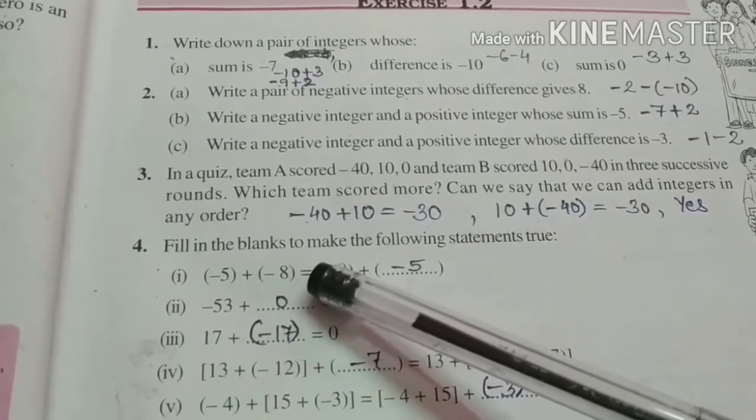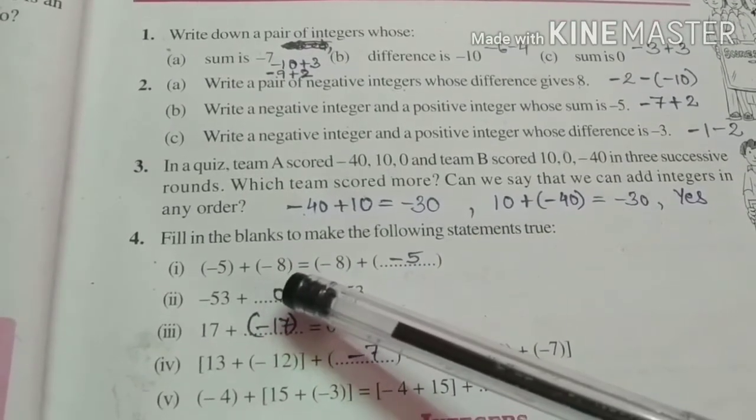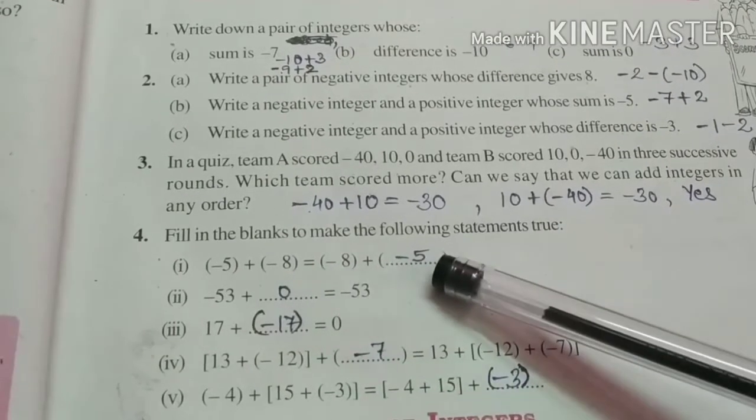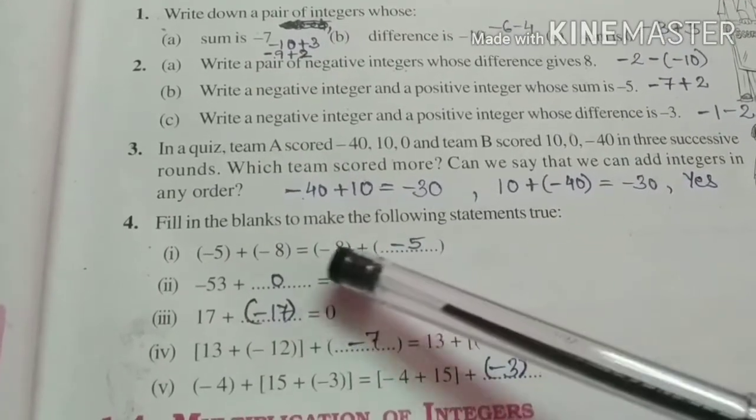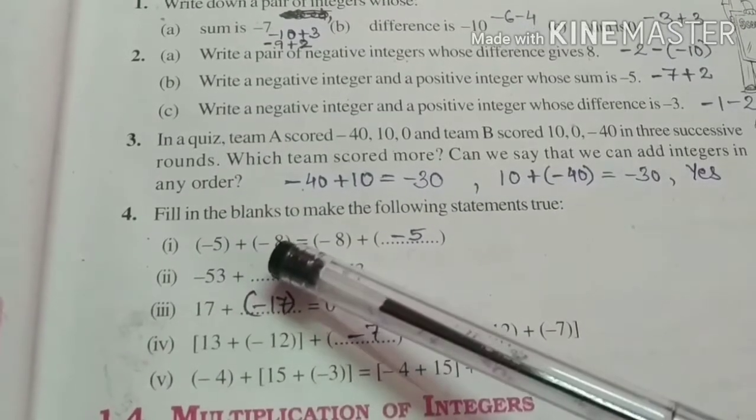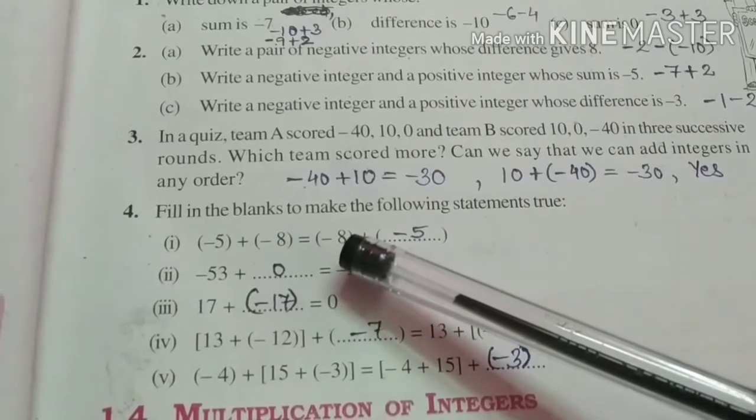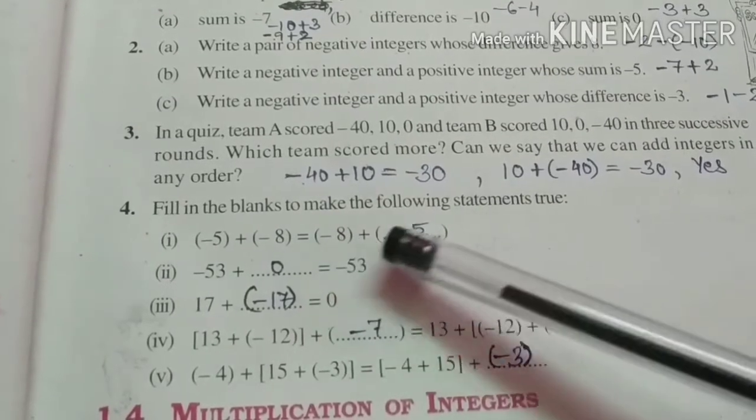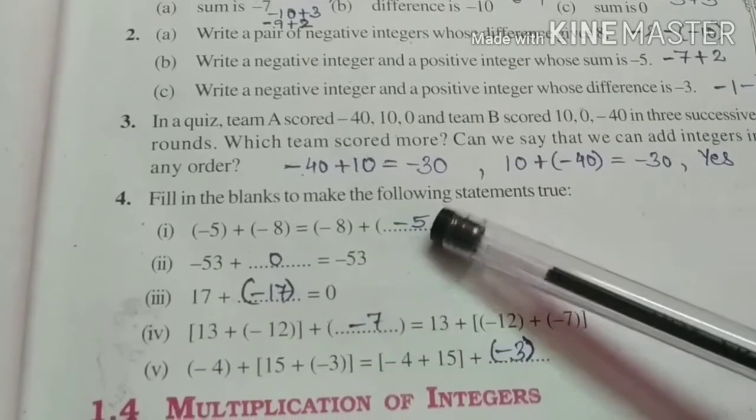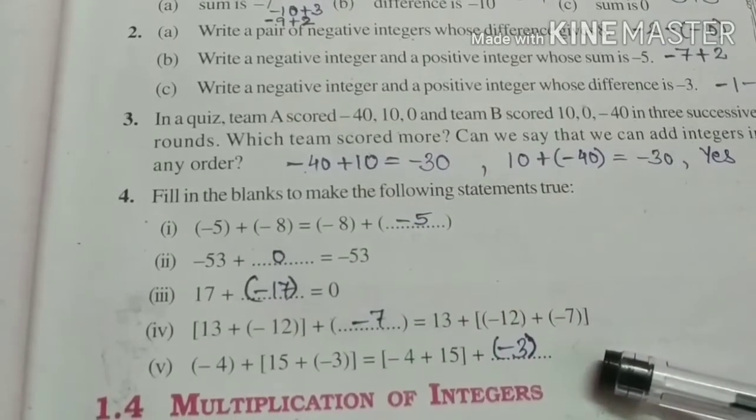First one, minus 5 plus minus 8 is equal to minus 8 plus dash. Here on left hand side minus 5 and minus 8. But right hand side only minus 8 is given. So which number will come? Minus 5. So I think this question is very simple. You can try it.